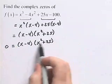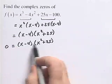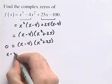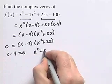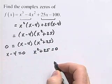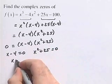To do this, we're going to set each of these factors equal to zero. So I'll have x minus 4 equals zero and x squared plus 25 equals zero. Here, I'll get x is equal to 4.